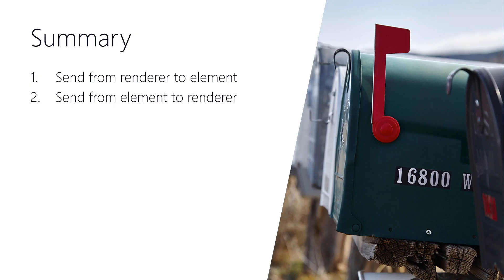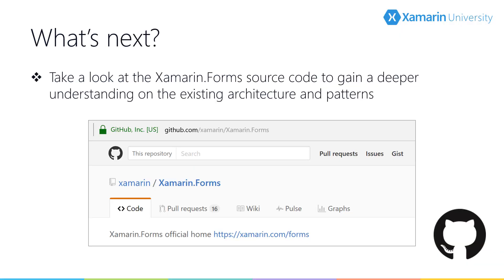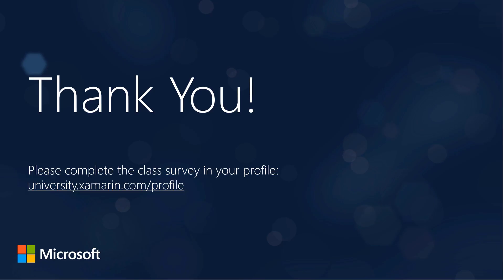In this last section, we've had a look at how we send information from the renderer to the element and how we send information from the element to the renderer. If you want to go deeper into the rendering architecture, the Xamarin Forms source code is a very good resource — the code is all open sourced and available on GitHub. Spending a couple of hours looking through the source code will give you some really excellent insights on how the Xamarin Forms team manages renderers and solves common problems. And that's it for this class — hopefully you've found some useful information about implementing renderers in your own applications. Thanks for watching and see you later.